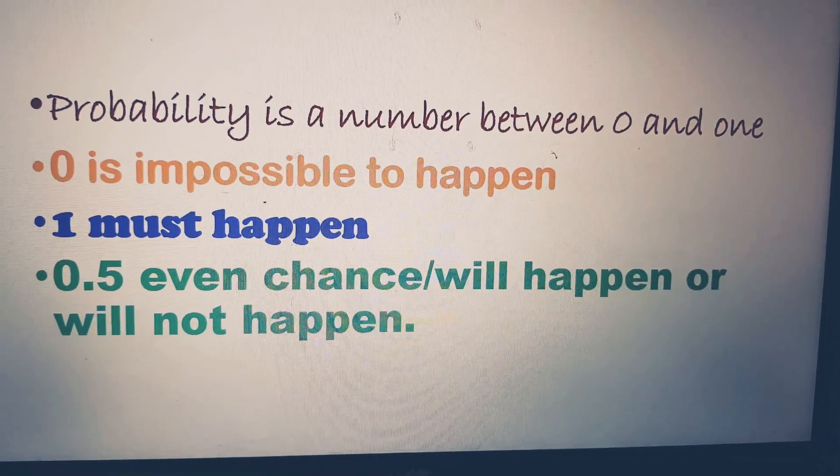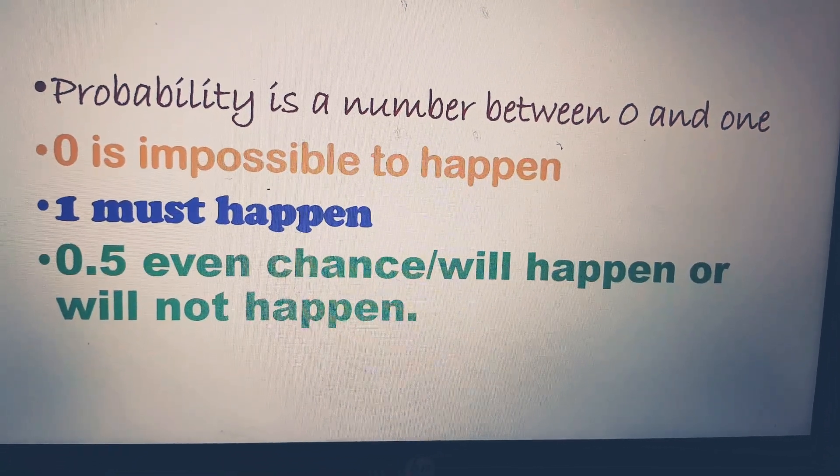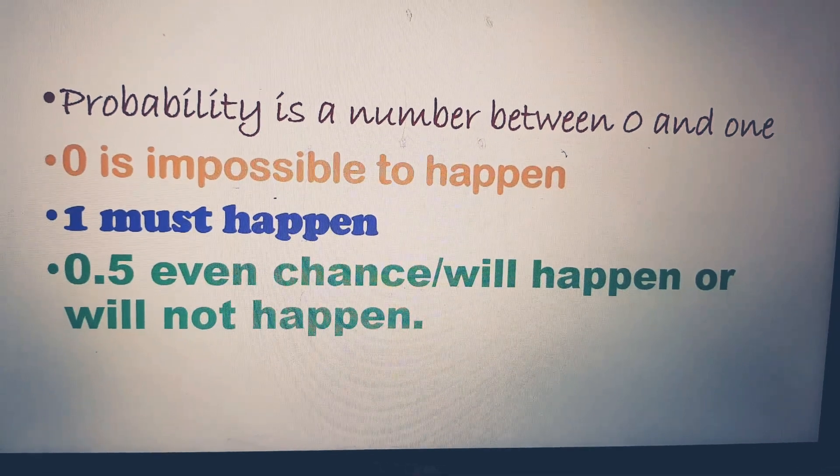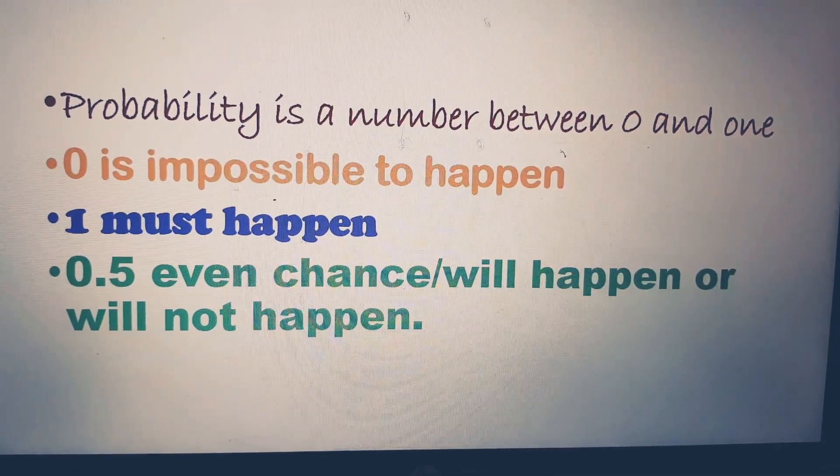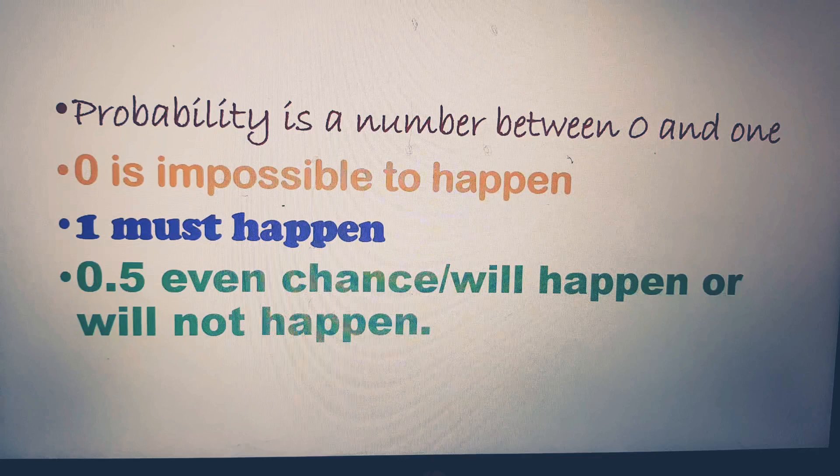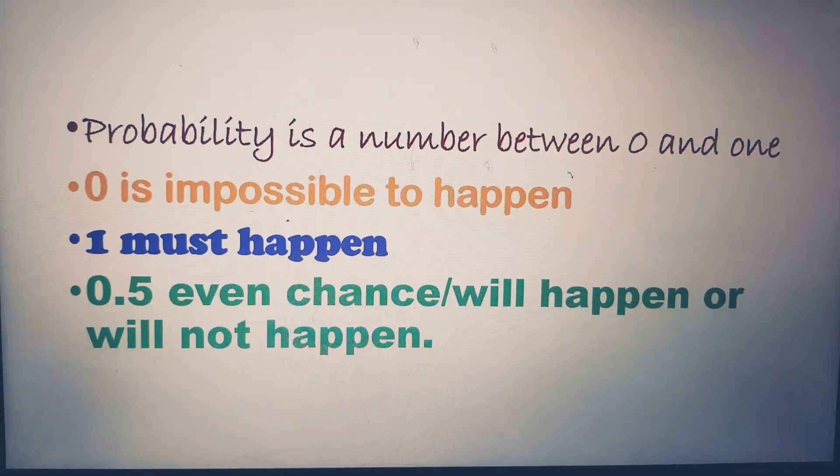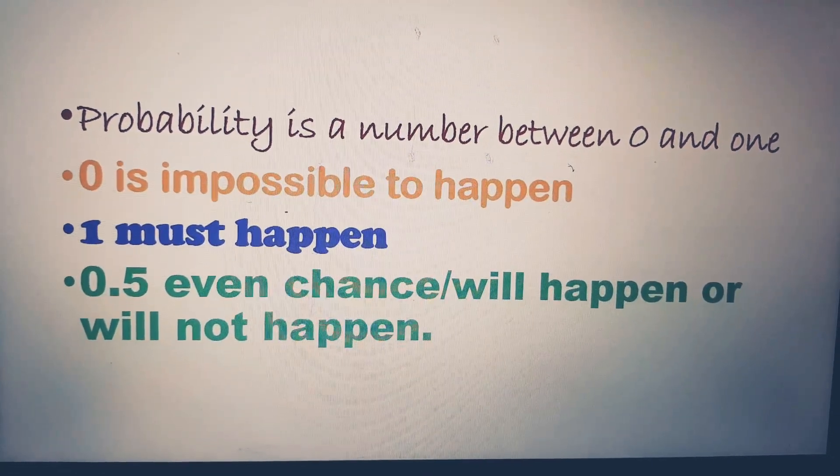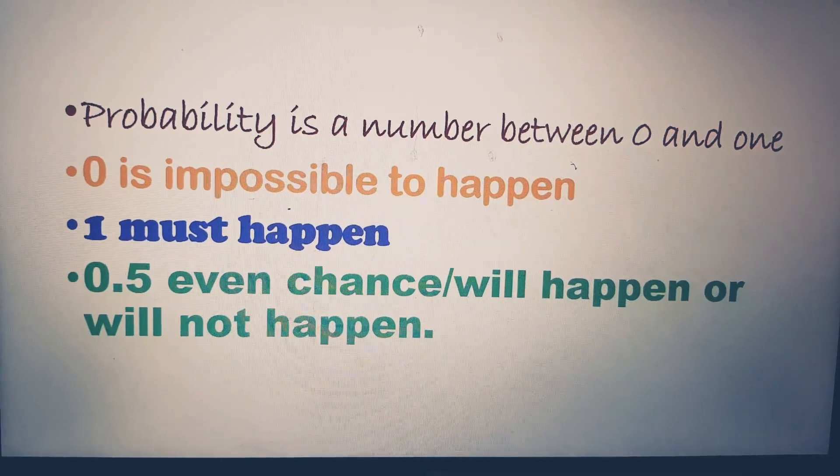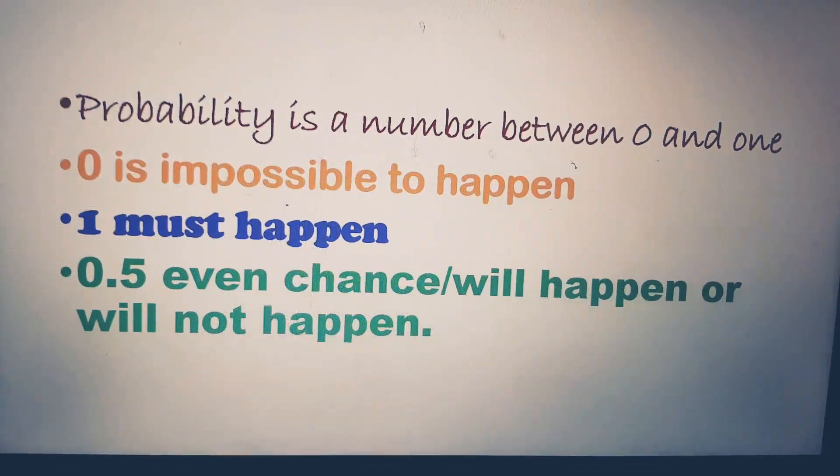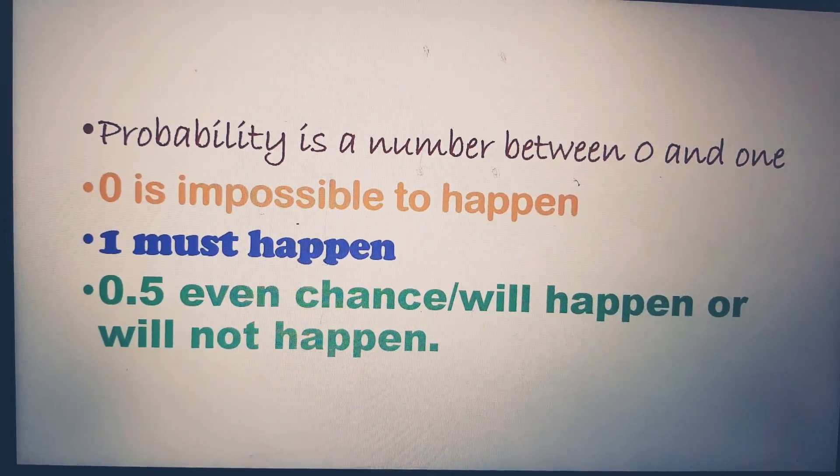Probability is a number between zero and one, where zero is impossible to happen, one must happen. Zero point five, which we can also call a half, is an even chance. That means it can happen or it might not happen.